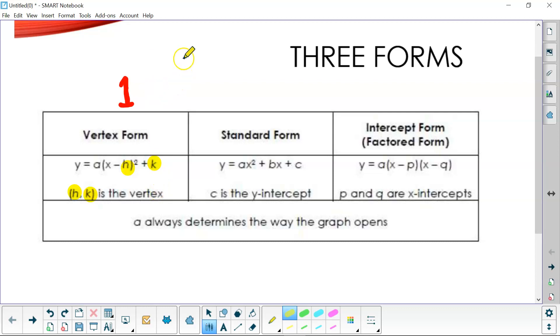Remember the vertex is either the lowest point of your graph when you have a parabola if it opens up, or your highest point if it opens down. It's the point on the line of symmetry where the graph changes direction.